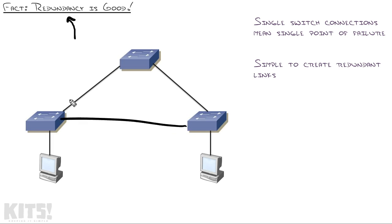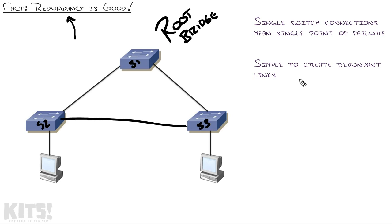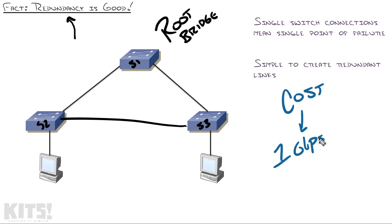Let's bring our redundant link back into the picture and label our switches. The way Spanning Tree works is by picking a center of the network — that is known as the root bridge. All the other switches will then find the best way to get to that center of the network, and they do that based on cost. The cost is a direct relation to the bandwidth of all of the links. Let's say these are all 1 gigabit per second connections — that has a Spanning Tree cost of 4. I'll show you a table in a moment with common link speeds and their Spanning Tree costs.